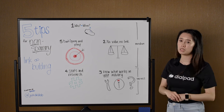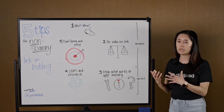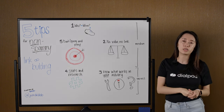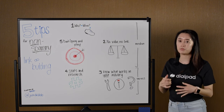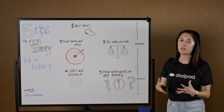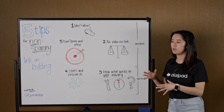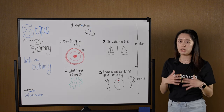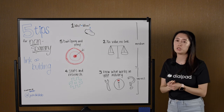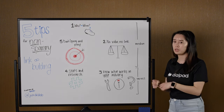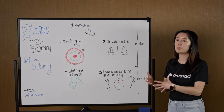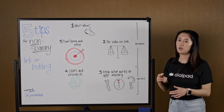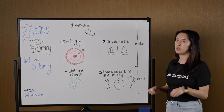First tip is: who? Who do you want to link to your content and your site? Are they journalists or content writers? You want to think about who you want links from, and then look at what they are linking to. Are they linking to certain types of guides? Make sure you do that research beforehand to understand your target audience — those journalists and people you want links from.